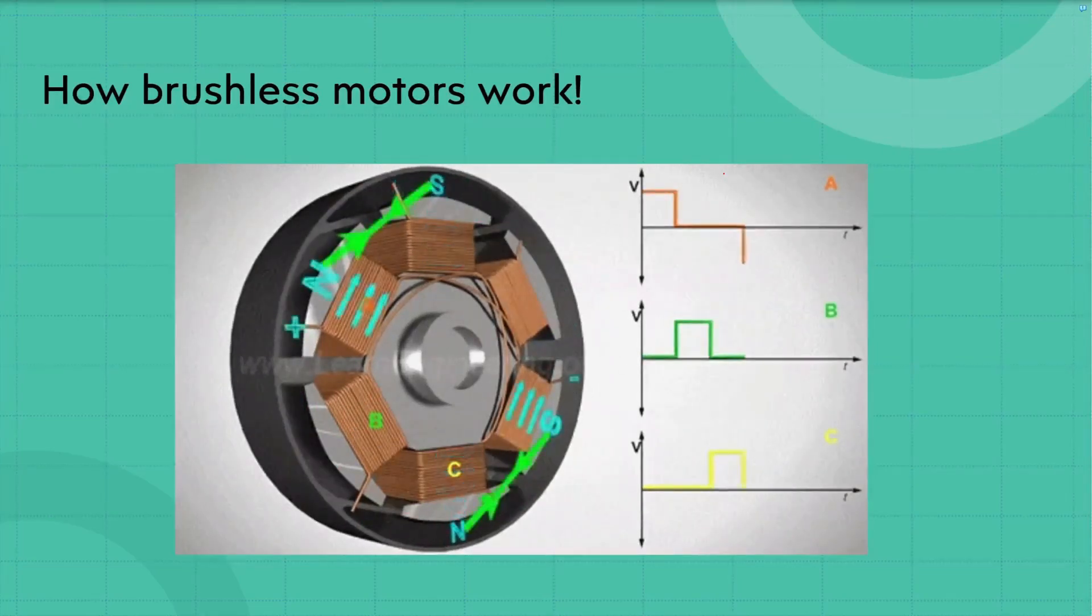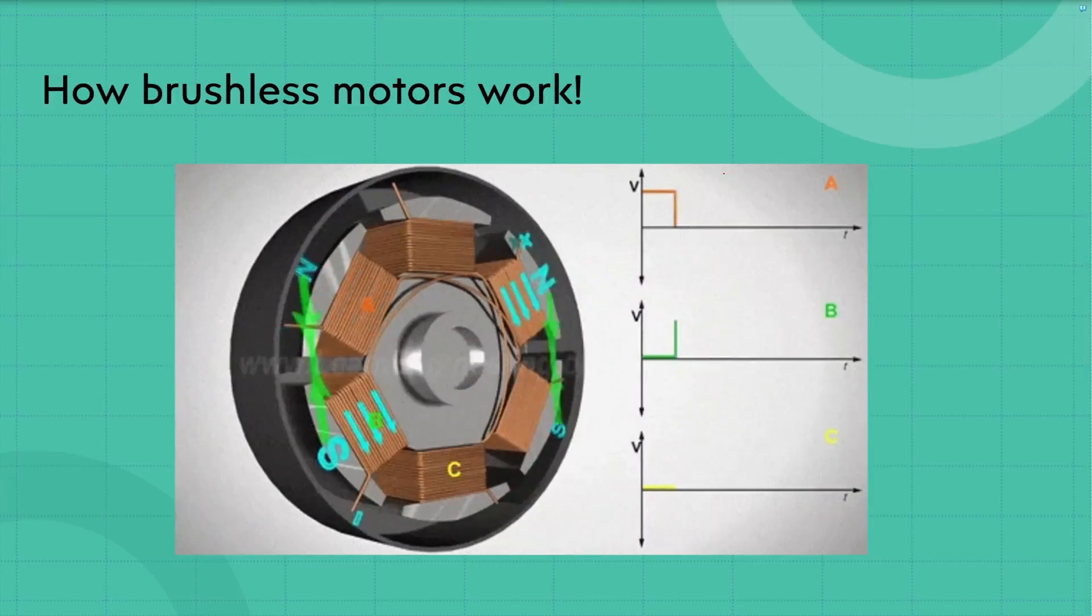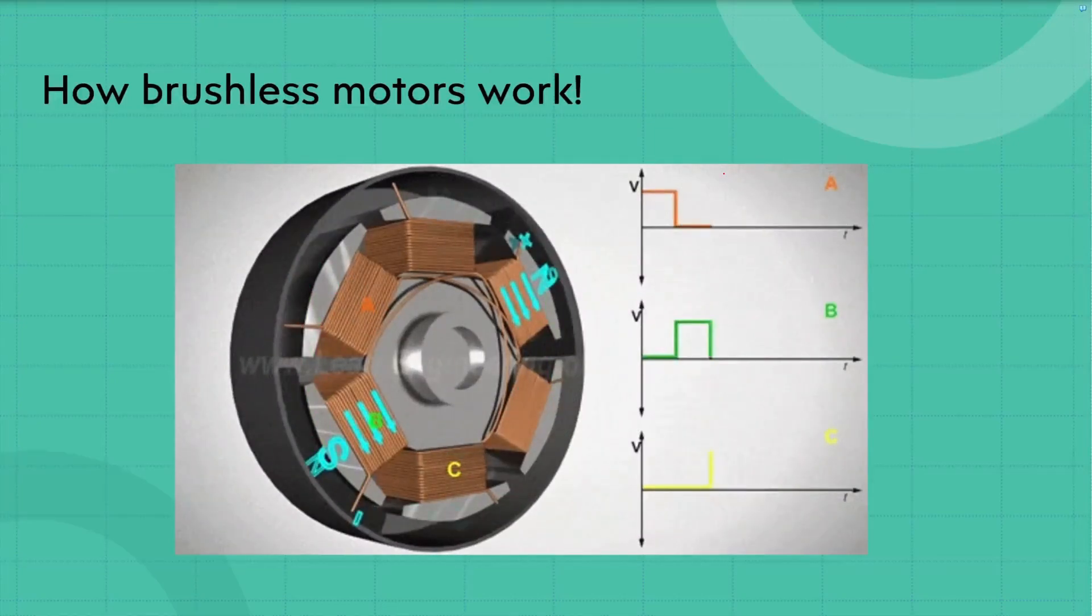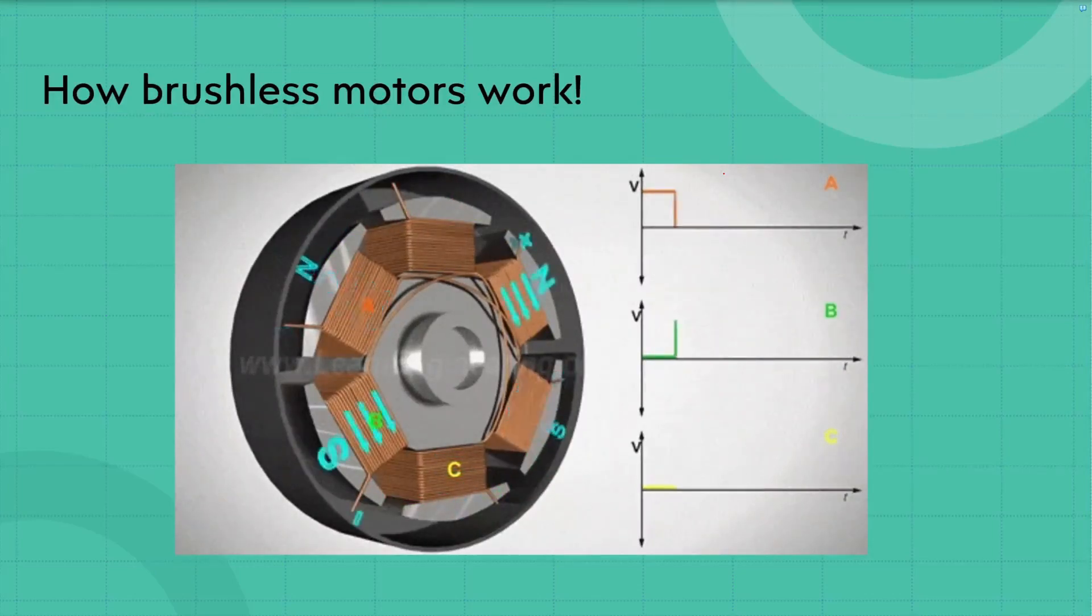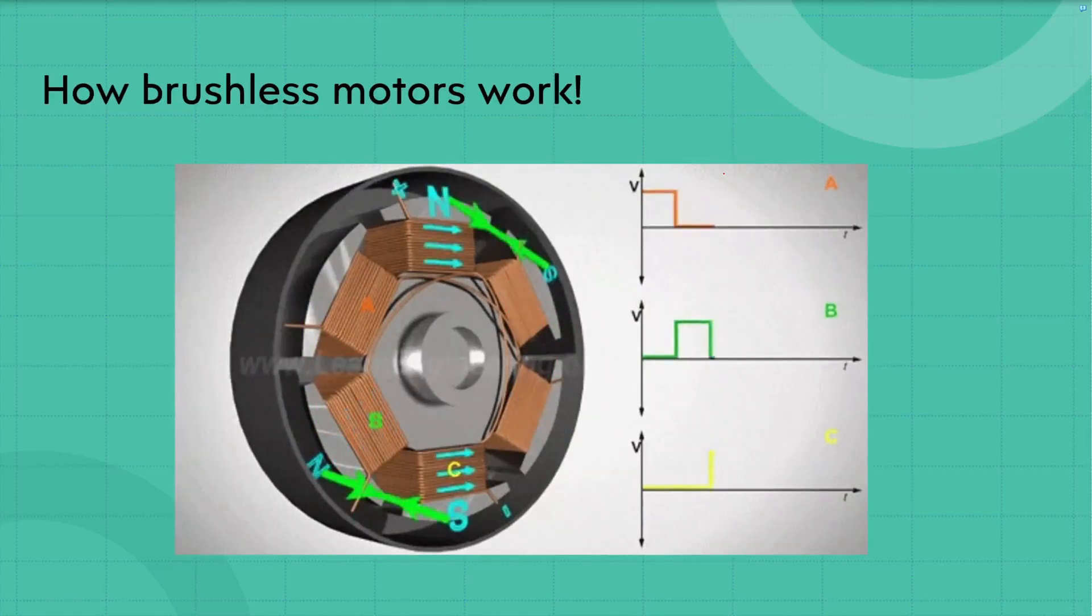Once it does that, the north and south pole will align with the magnetic field of A coil. Once that's done, it will actually stop sending current through A phase. Then it will turn on B phase and start sending current through B phase. And then the rotor will rotate to align with B phase's magnetic field. And that's also the same with C phase.